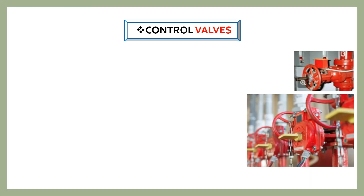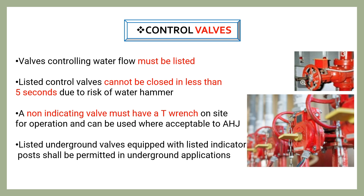Control valves can be gate valves or butterfly valves. Valves controlling water flow must be listed, and listed control valves cannot be closed in less than 5 seconds due to the risk of water hammer. A non-indicating valve must have a T-wrench on site for operation and can be used where acceptable to the AHJ. A non-indicating valve will be installed underground, and listed underground valves equipped with listed indicator posts shall be permitted in underground applications.